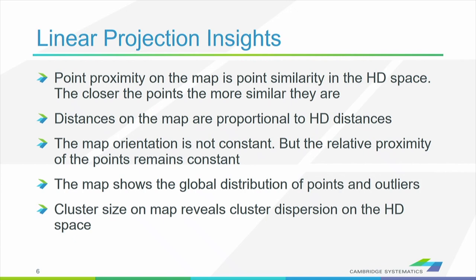Some key insights: point proximity on the map is point similarity in the high-dimensional space. Points that are closer on the map are also closer in the three-dimensional spherical space. Distances on the map are proportional to the high-dimensional distances. These are stochastic methods, so every time you run the projection you may get a map oriented differently. What you should be looking at is the distances and similarities between points, not the orientation.